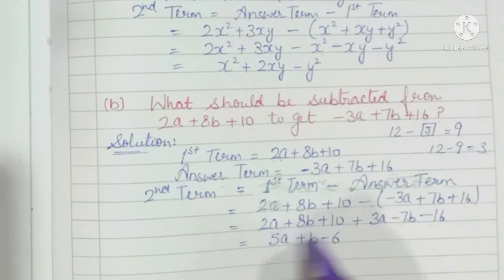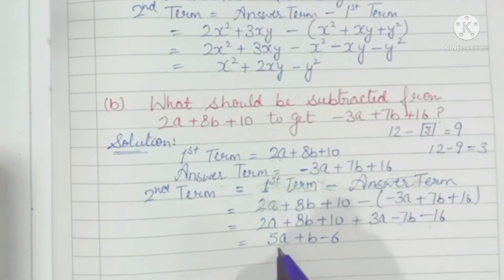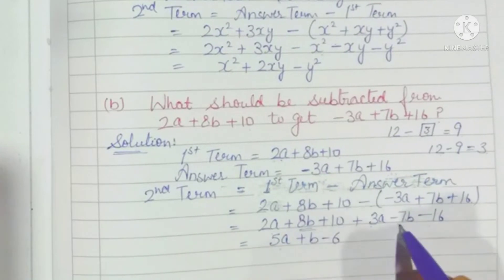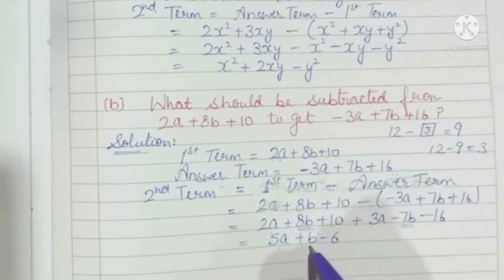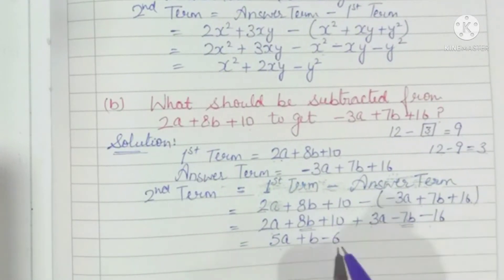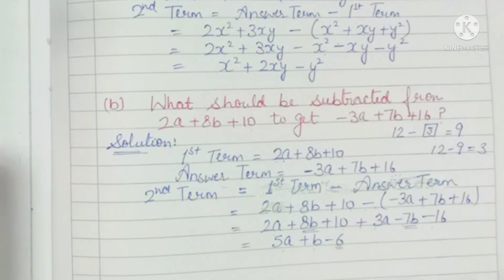Now solve: 2a plus 3a is 5a; 8b minus 7b is b; 10 minus 16 is minus 6. So the required expression is 5a plus b minus 6.